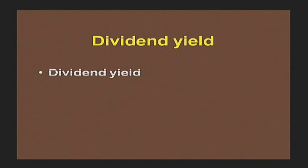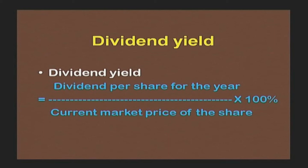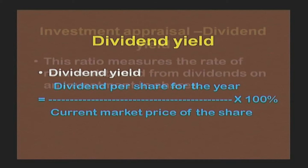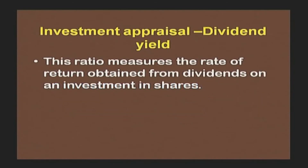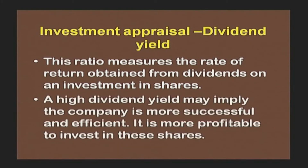The last in the list is dividend yield. It is computed as dividend per share for the year (DPS) divided by current market price of the share (MPS) × 100. This ratio measures the rate of return obtained from dividends on investment in shares. A high dividend yield may imply the company is more successful and efficient, and it is more profitable to invest in these shares.